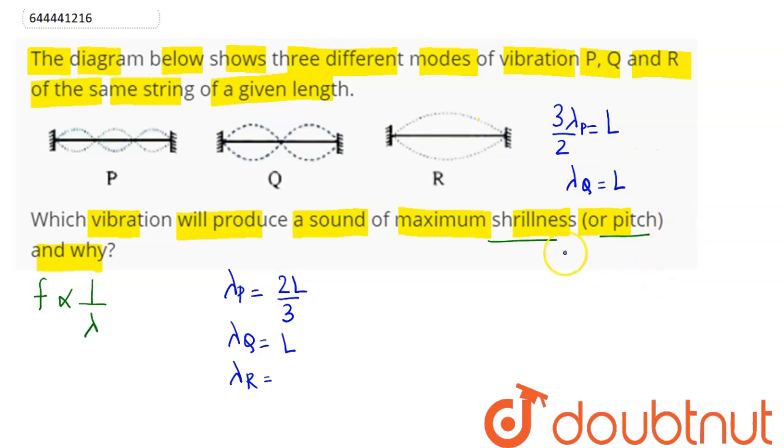And in similar manner for R, we have lambda by 2. So for R, lambda by 2 is equal to L. Hence lambda R is equal to 2L. Here we have all length equal, hence we can say lambda P is less than lambda Q is less than lambda R.